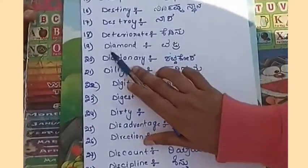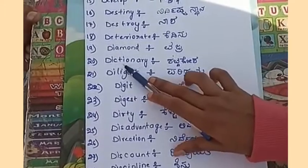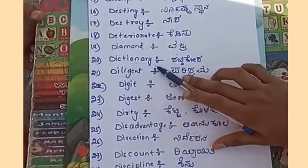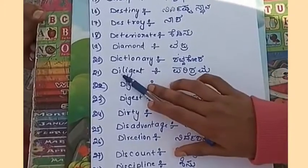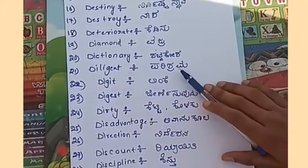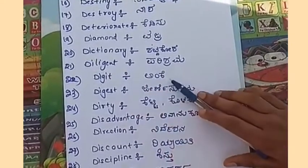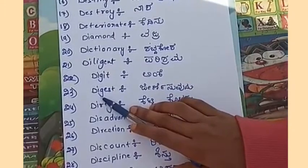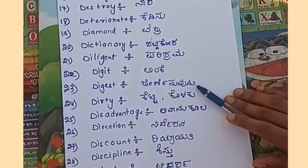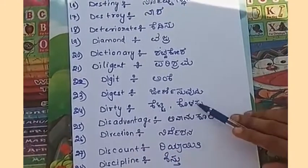Kedisoo. Diamond, D-I-A-M-O-N-D, diamond — vajra. Dictionary, D-I-C-T-I-O-N-A-R-Y, dictionary — shabd-kosha. Diligent, D-I-L-I-G-E-N-T, diligent — parishrama. Digit, D-I-G-I-T, digit — angke. Digest, D-I-G-E-S-T, digest — jinisi suvudu. Dirty, D-I-R-T-Y, dirty — ketta kodaku.